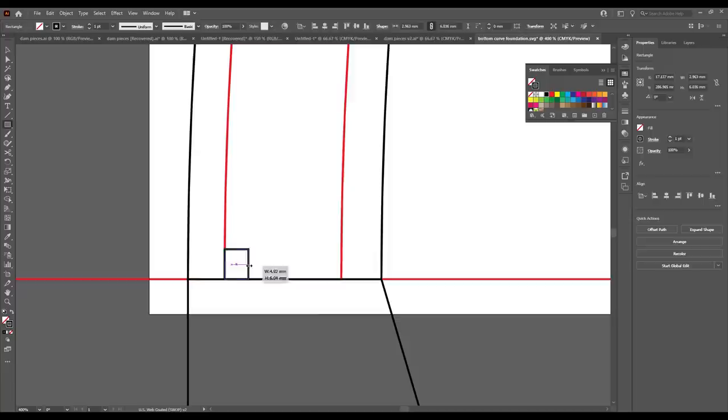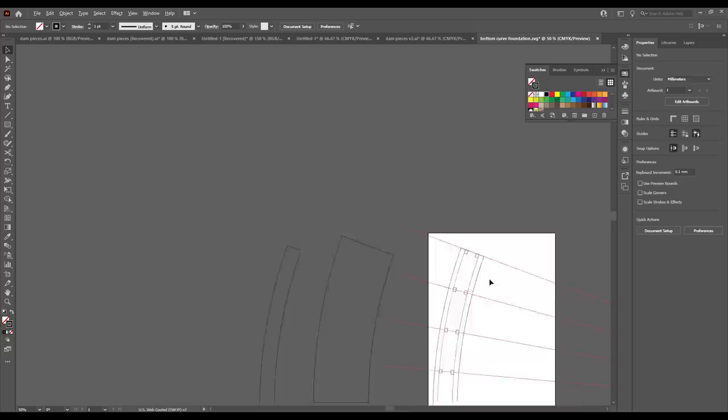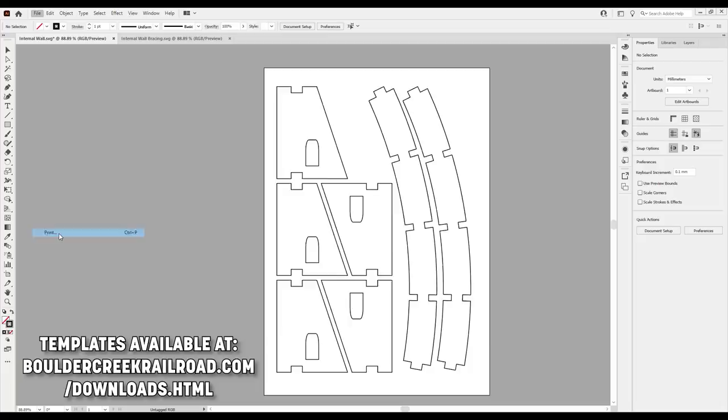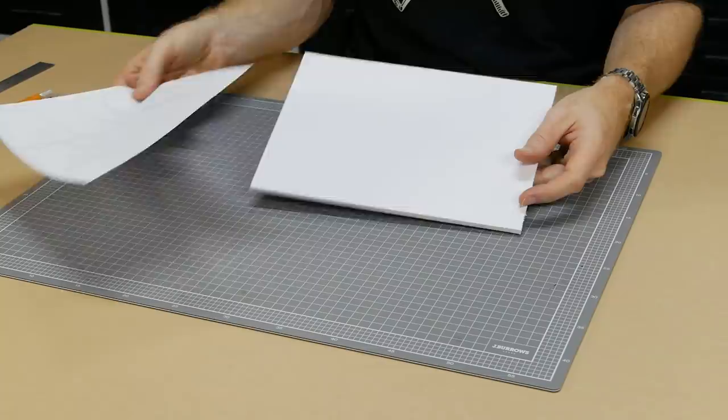The main feature of the diorama will be the dam wall. I drew inspiration from the box art in deciding on this project. To create the templates for the dam wall I used Adobe Illustrator. All the drawings I use for this model will be available on my website so if you don't have a similar program you'll still be able to download the templates and print them out yourself.